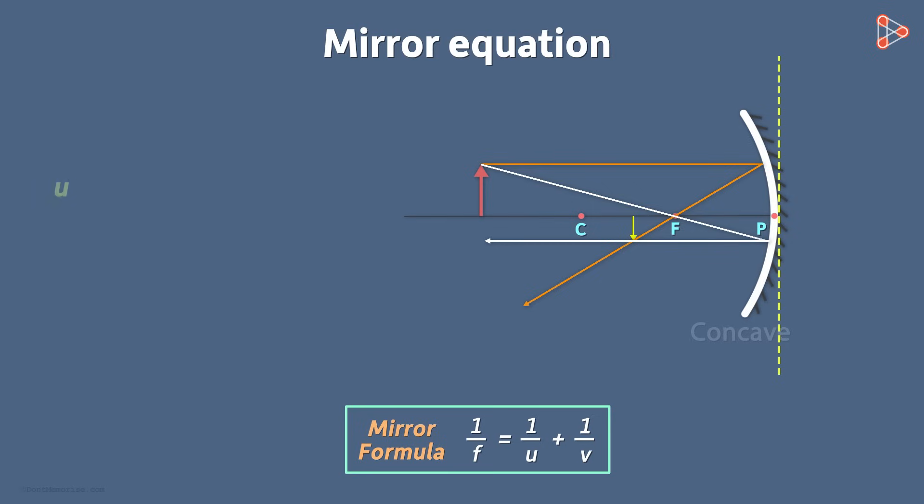In this equation, u is the distance between the object and the mirror. So this distance will be u. It is the distance between points A and P. Remember, the distance between two parallel lines will always be the same. So this distance is nothing but distance between points A and P.